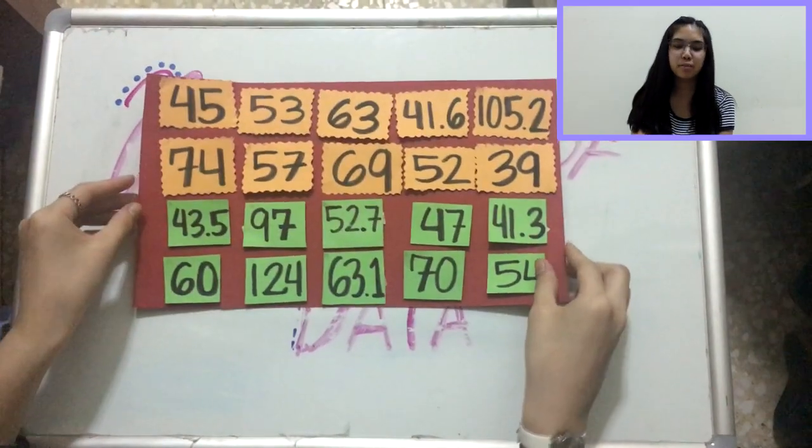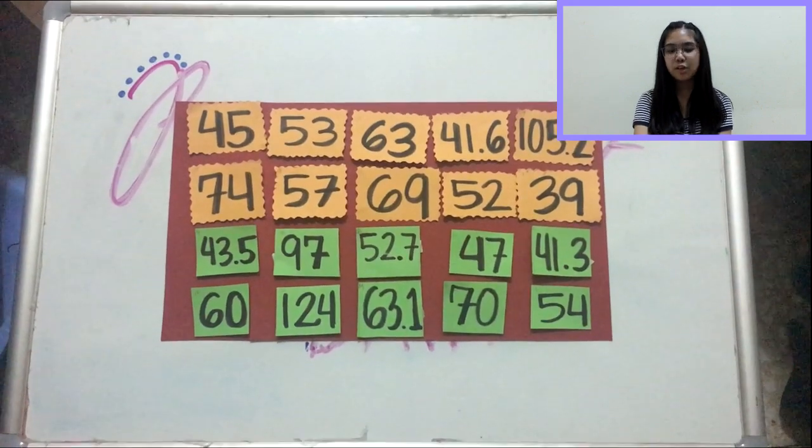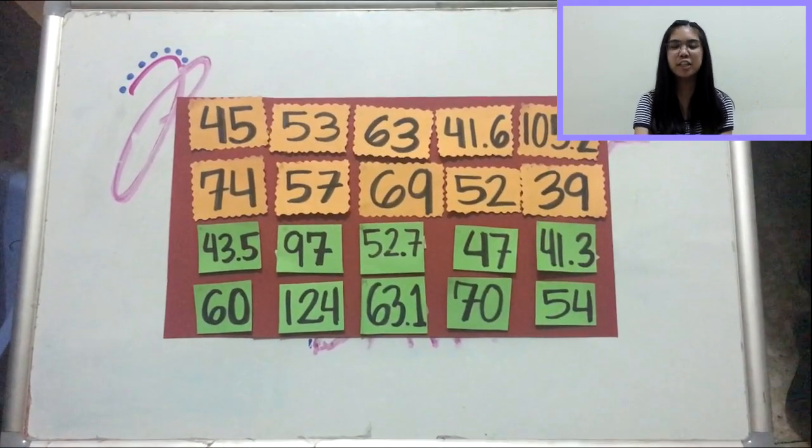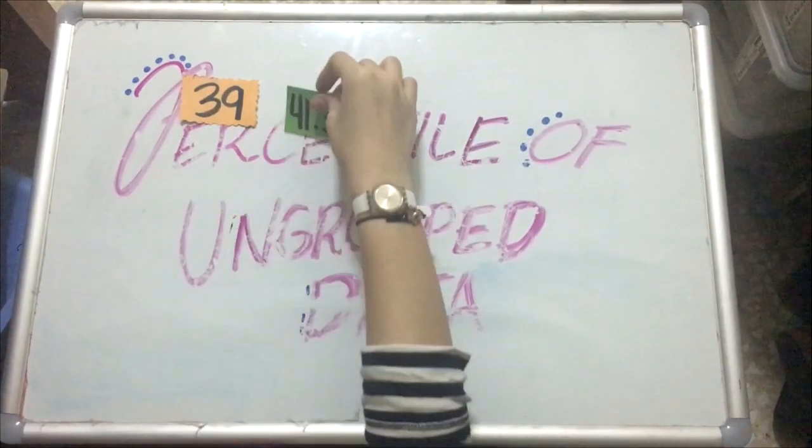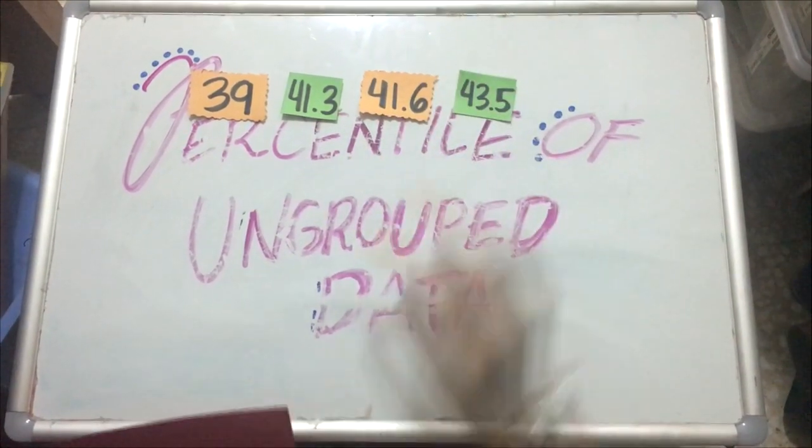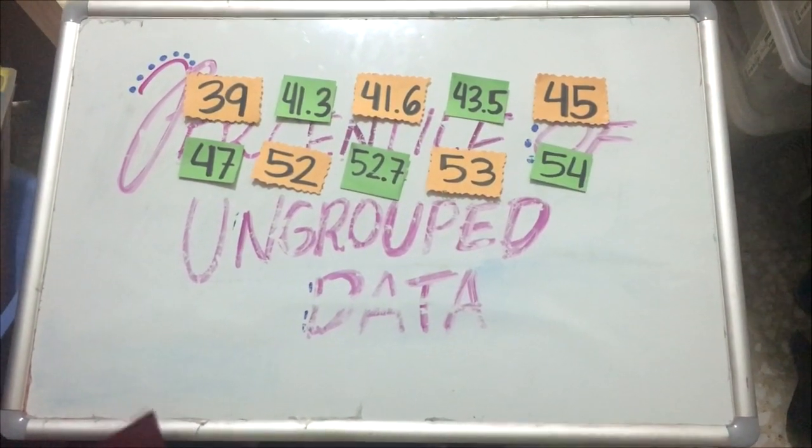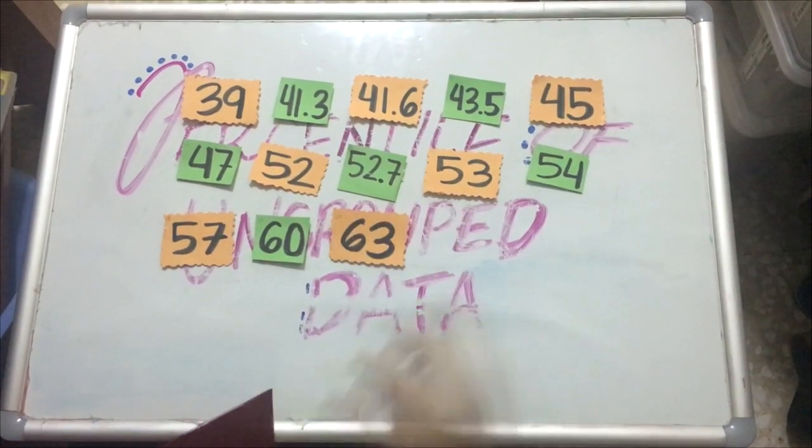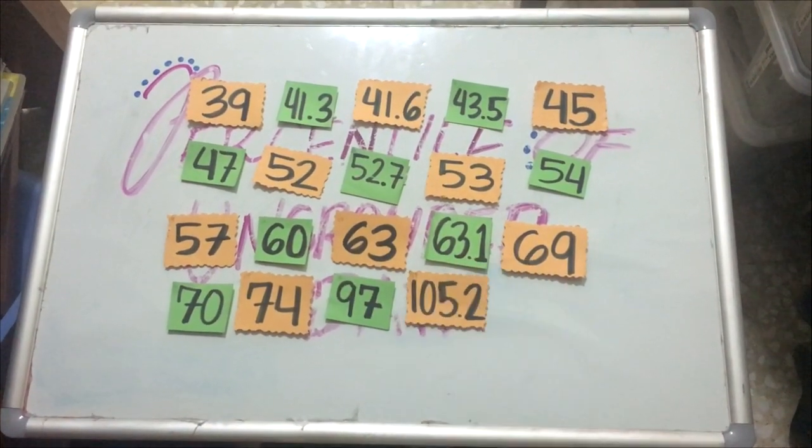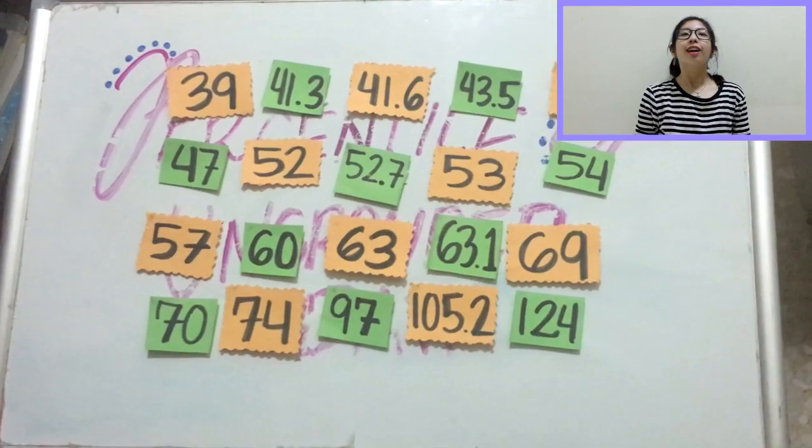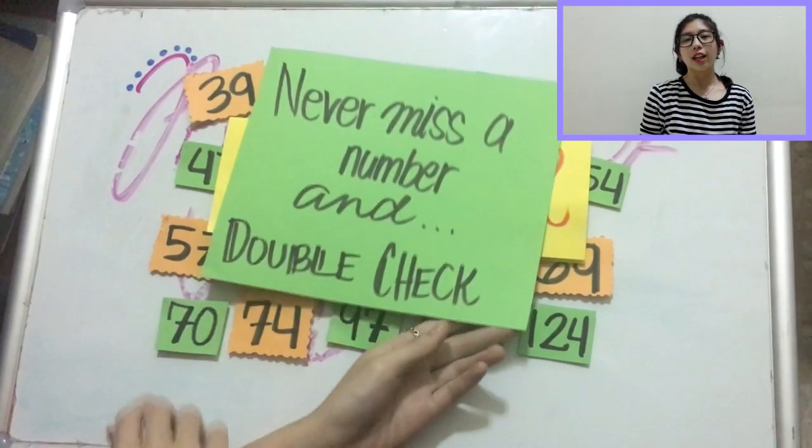And now, for a sample problem. The following are the weight of the elderly in a healthcare center. For the first step, you have a set of 20 numbers that you have to arrange in an ascending order. A tip to remember: Keep calm when arranging the numbers in order. Never miss a number.